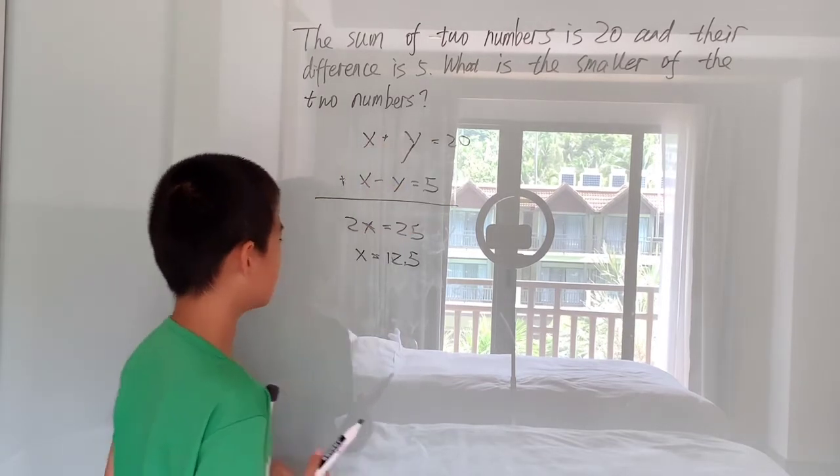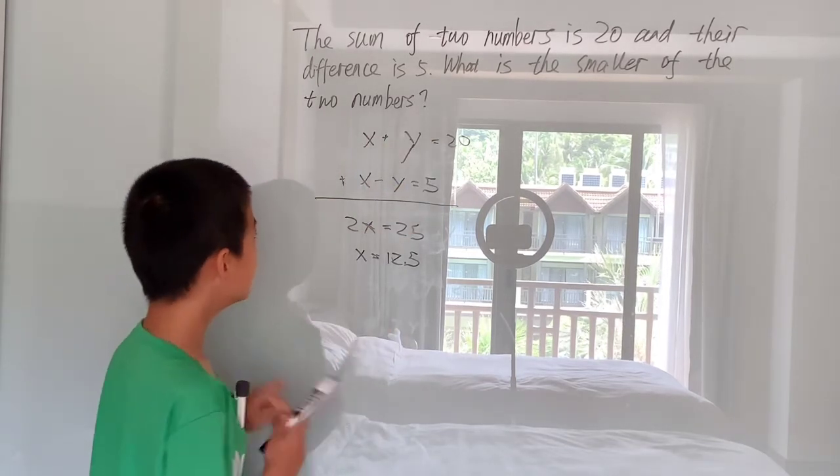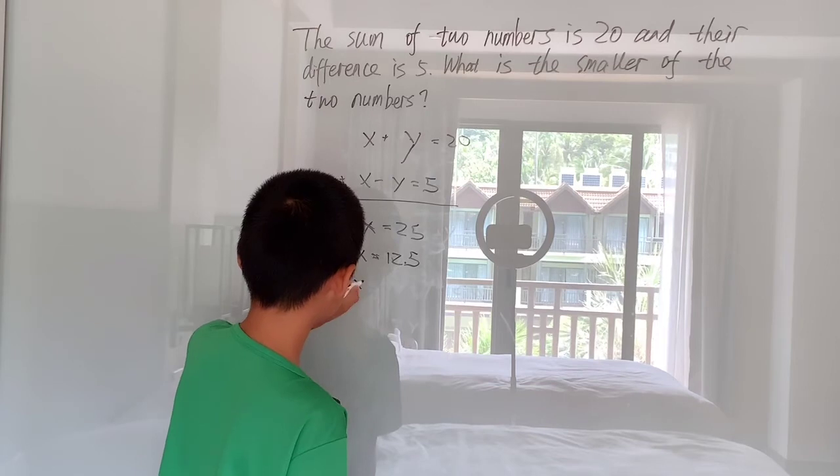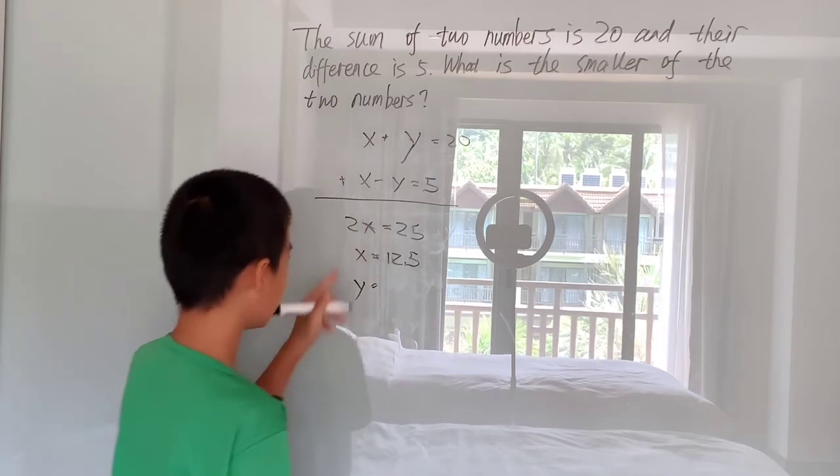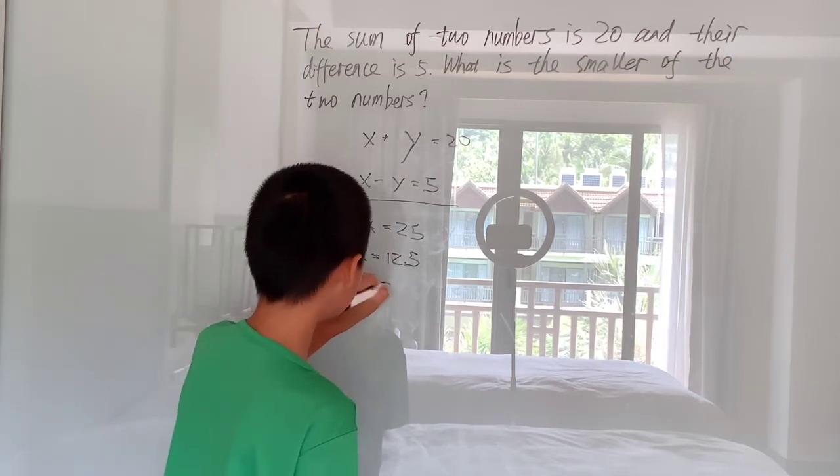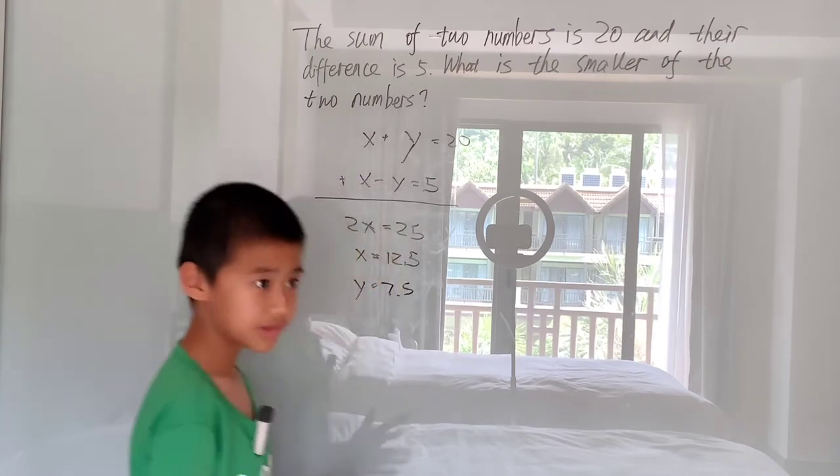Well, in other words, you can just subtract 12.5 from both sides and see, in this problem, x is 12.5 and y is 7.5.